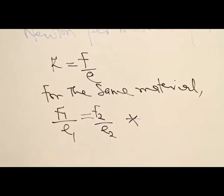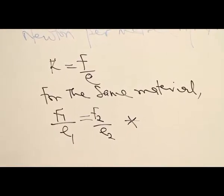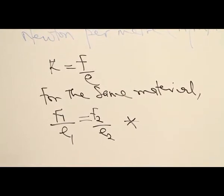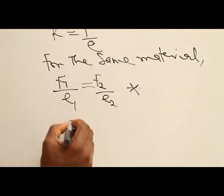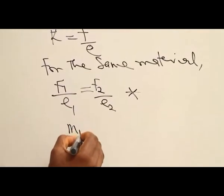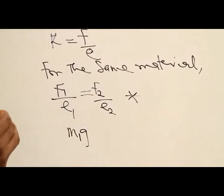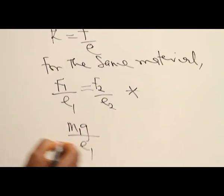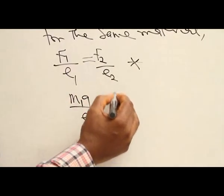Now the force applied is also considered to be the weight of the object placed on the elastic material. If that is the case, we can rewrite this equation as m1g, because weight is mass times acceleration, where m1 is the mass and g is the acceleration due to gravity. Then e1 is the extension.